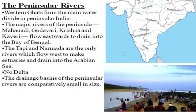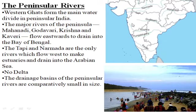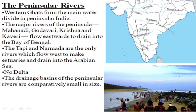We have two types of rivers: east flowing river and west flowing river. The major rivers of the peninsula are Mahanadi, Godavari, Krishna, and Kaveri. These are the major rivers of peninsular India in terms of water holding. They flow eastward to drain into the Bay of Bengal. The Western Ghats act as a water divide, and rivers originating there drain into the Bay of Bengal.